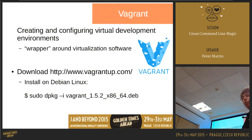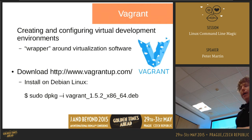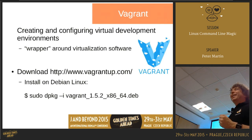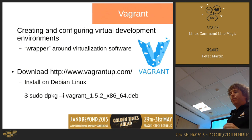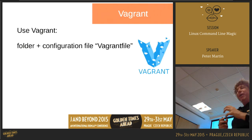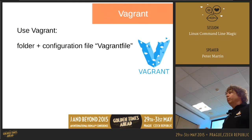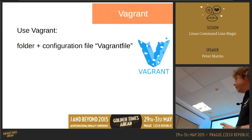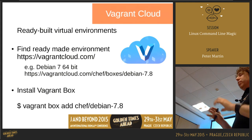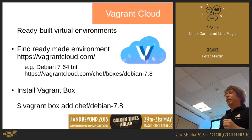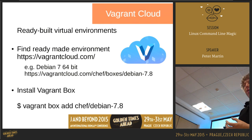To use Vagrant, first install it on your local machine from vagrantup.com. For Debian you install the .deb package. Vagrant uses a 'Vagrantfile' — similar to a .git folder for Git — which stores all information about the box you cloned and its configuration. You can go to Vagrant Cloud to find virtual environments and search for what you need — you can even find Joomla boxes, like the one created by Joomla Tools for testing.